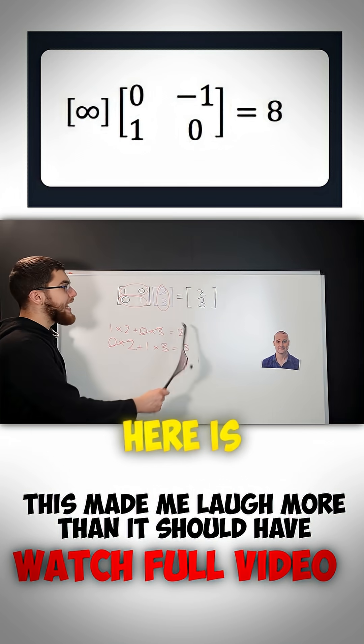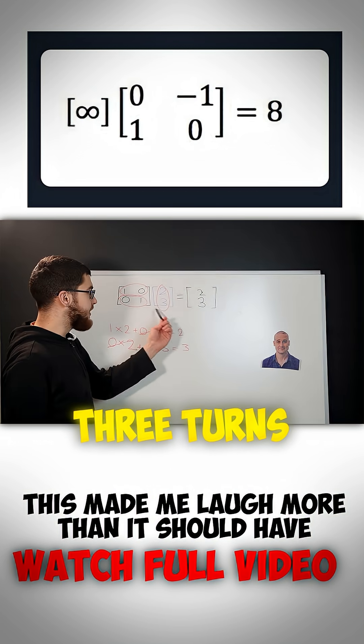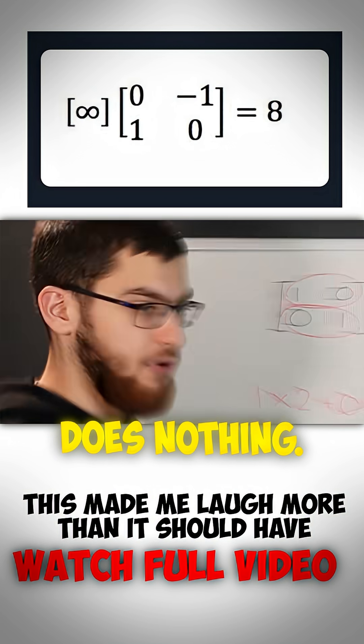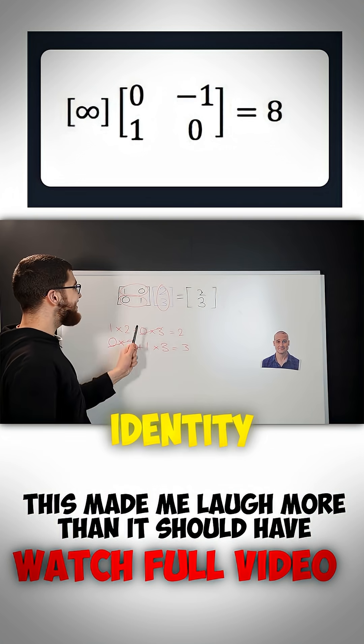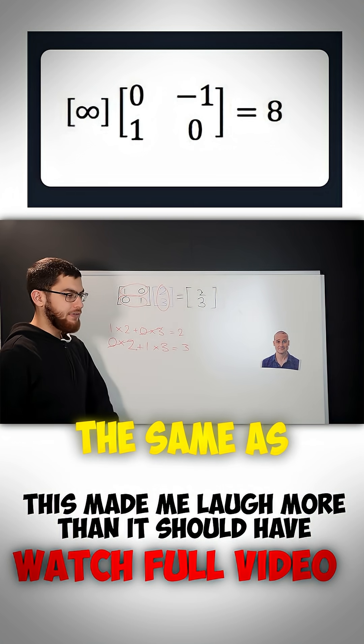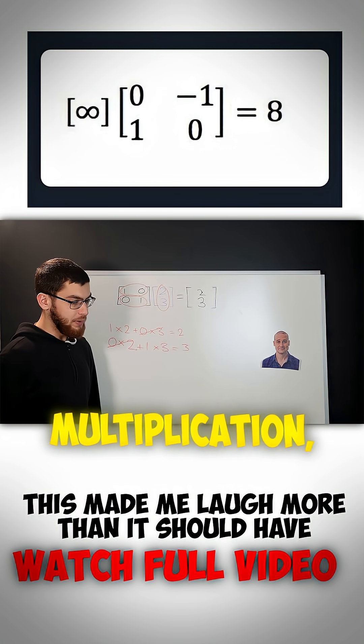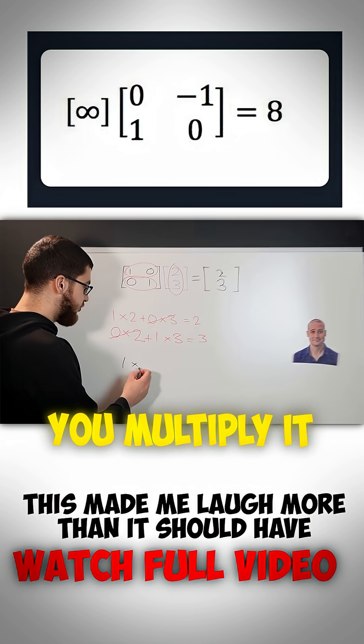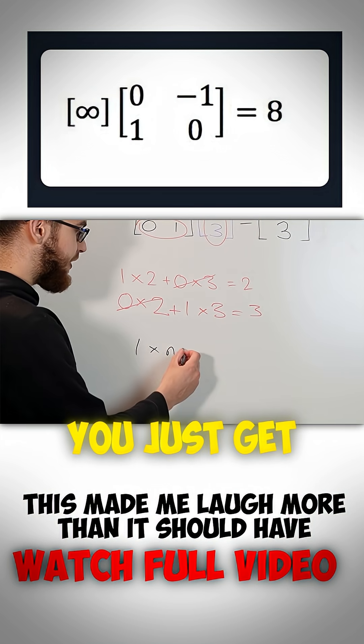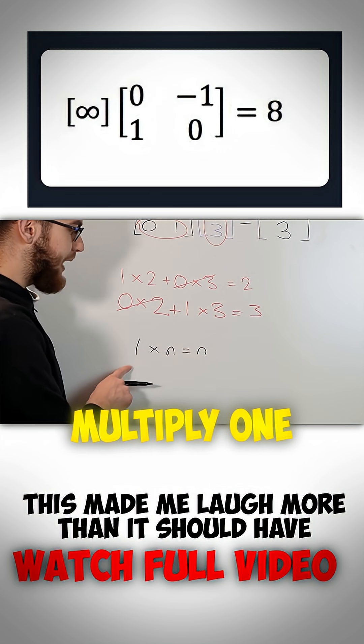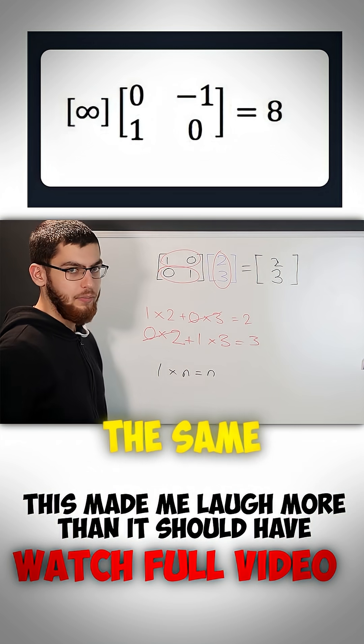Basically all we've done here is nothing. 2, 3 turns into 2, 3, so this matrix does nothing. It's called the identity matrix, and it's the same as the identity element in multiplication, which basically when you multiply it by anything, you just get the same thing. Just like when you multiply 1 by anything, you just get the same thing.